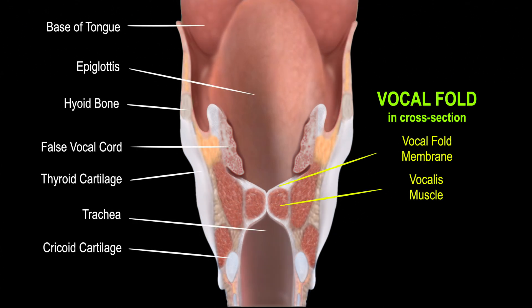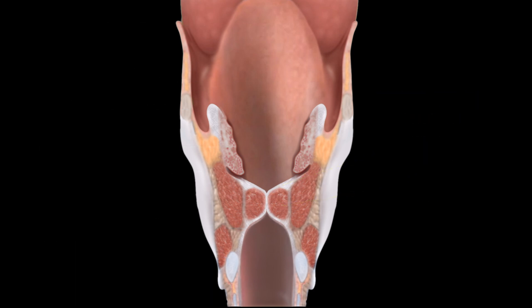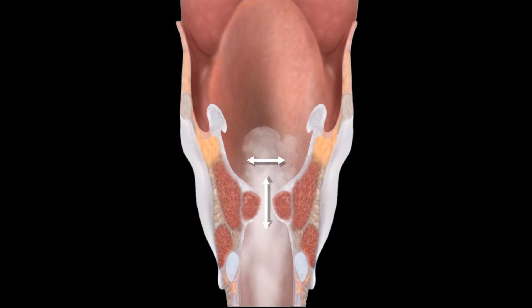Furthermore, when the vocal folds vibrate against each other, there is both a horizontal and vertical component.